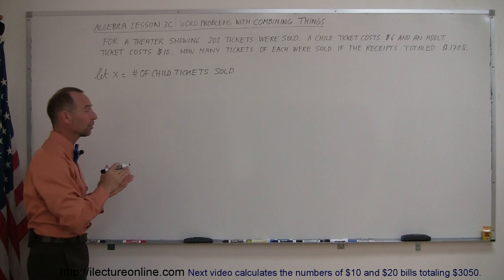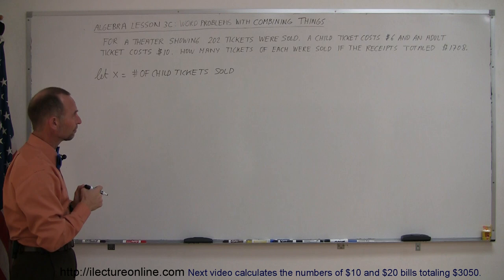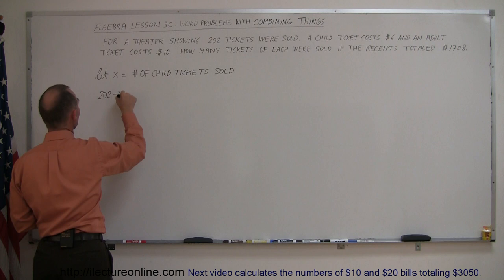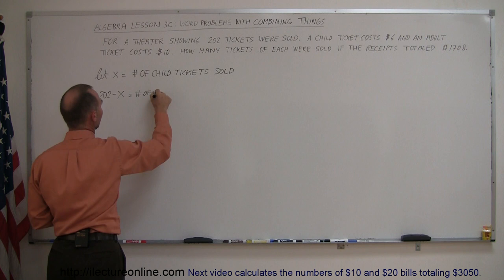Then, how do we express the number of adult tickets sold? They tell us that there were a total of 202 tickets, so if we subtract from that the number of children tickets, we end up with the number of adult tickets. So the total 202 minus the amount sold for children equals the number of adult tickets sold.